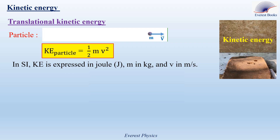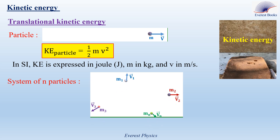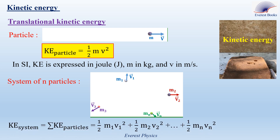In SI, the kinetic energy is expressed in joules, the mass in kilograms, and the speed in meters per second. Now consider a system of N particles: particle 1 moves with speed V₁ and mass M₁, particle 2 has mass M₂ and speed V₂, until particle N with mass Mₙ and speed Vₙ. The kinetic energy of this system equals ½M₁V₁² plus ½M₂V₂², up to ½MₙVₙ², which are the kinetic energies of each particle.